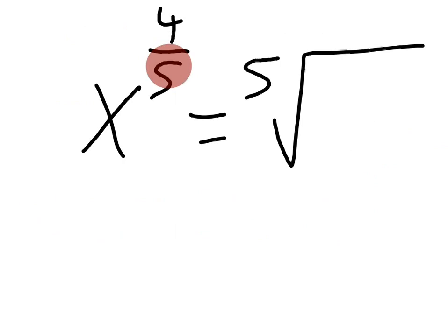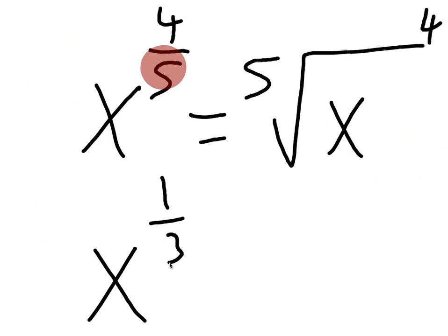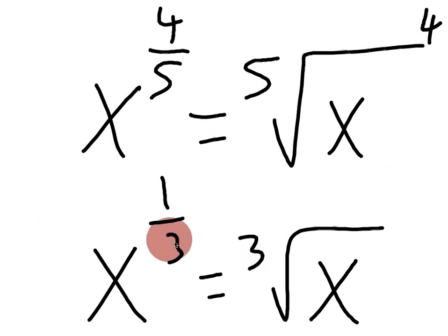We put the denominator of the fraction as the root and the numerator as the exponent, and of course the base goes in the radical. That's why it's considered an odd root. Another example could be x to the one-third. We would rewrite that as the cube root of x, which is also an odd root function.